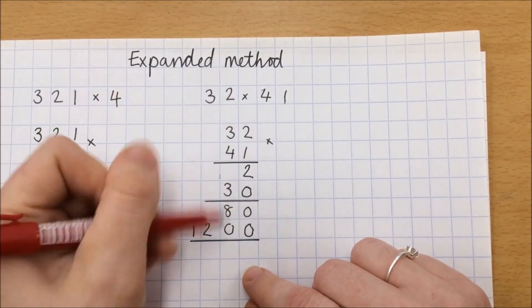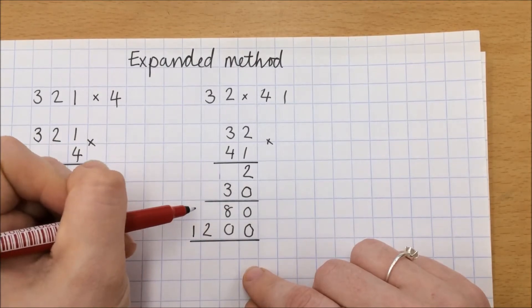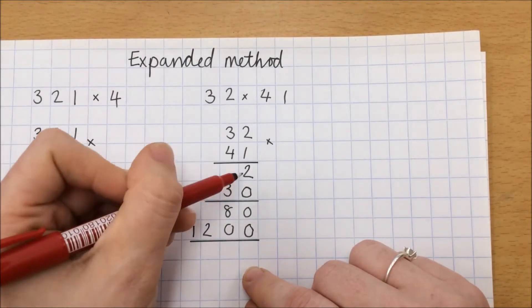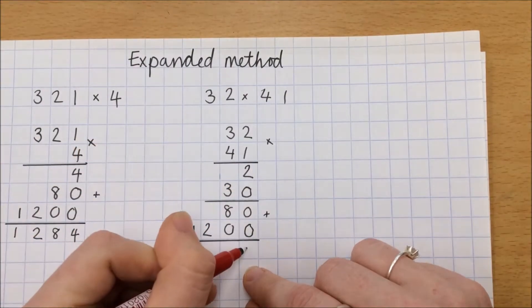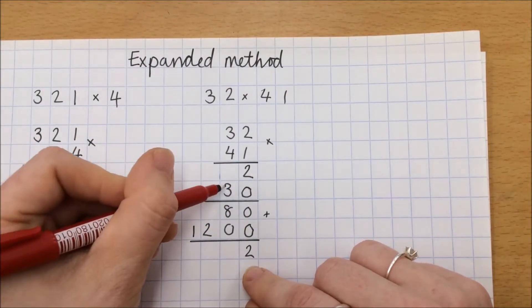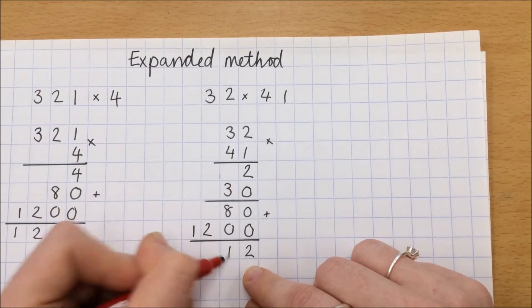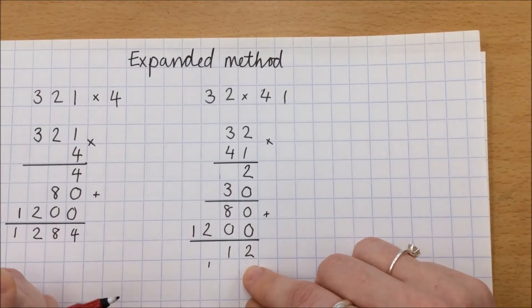I can now add this in a column method. And it doesn't matter if we've drawn a line. We just ignore that at this point. So 2 plus 0 plus 0 plus 0 is 2. 3 tens plus 8 tens is 11 tens. And we carry that 1 at the bottom.